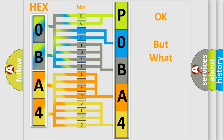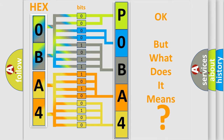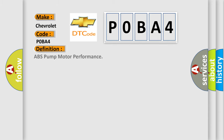The number itself does not make sense to us if we cannot assign information about what it actually expresses. So, what does the diagnostic trouble code P0BA4 interpret specifically for Chevrolet car manufacturers? The basic definition is: ABS pump motor performance.